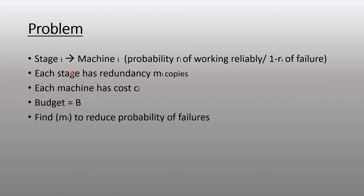In this problem, there is a production system with n stages, stage one through stage n. Each stage has a single machine type, machine i, and there's a probability ri of it working reliably and one minus ri of that machine failing.